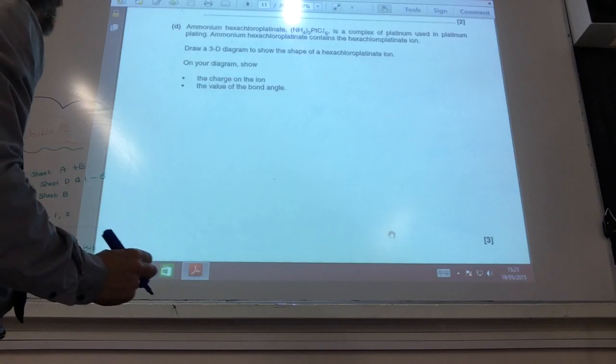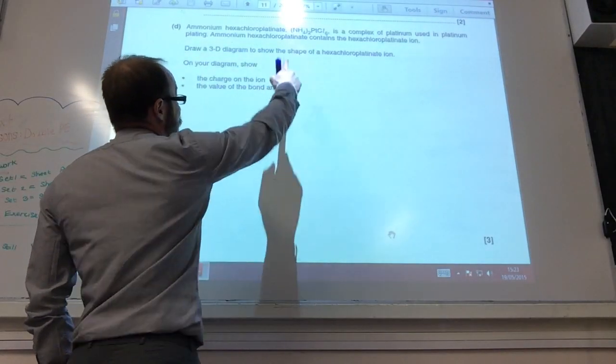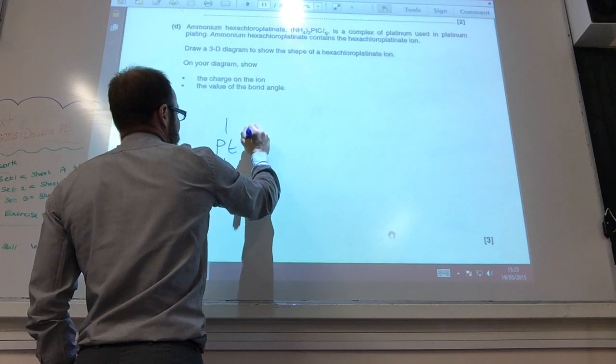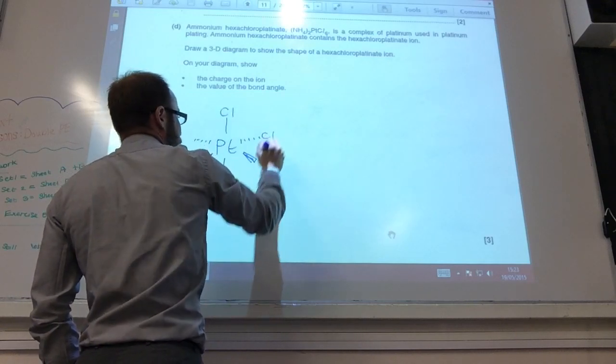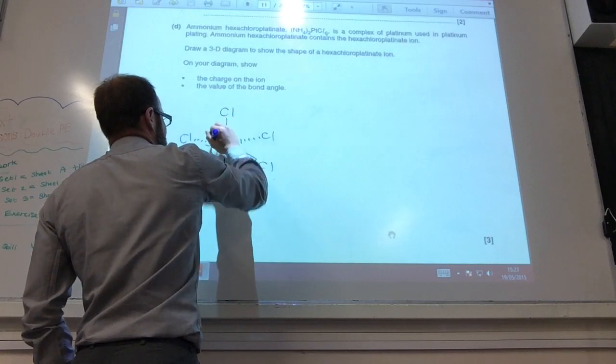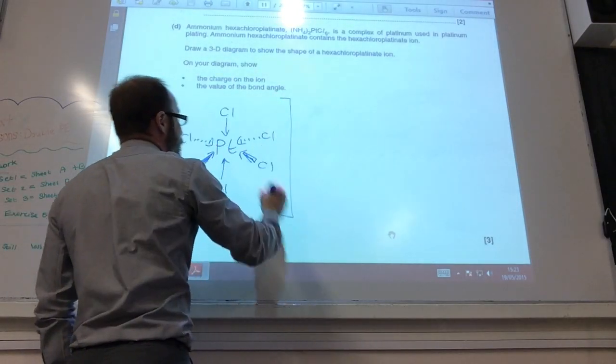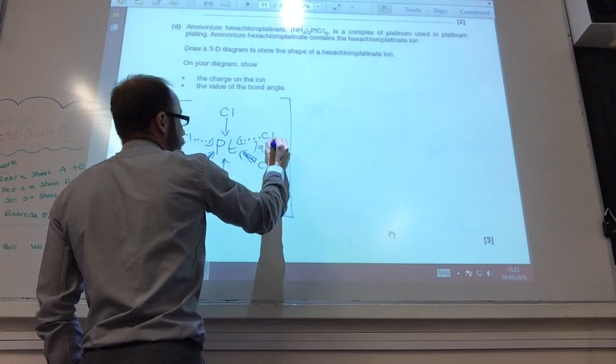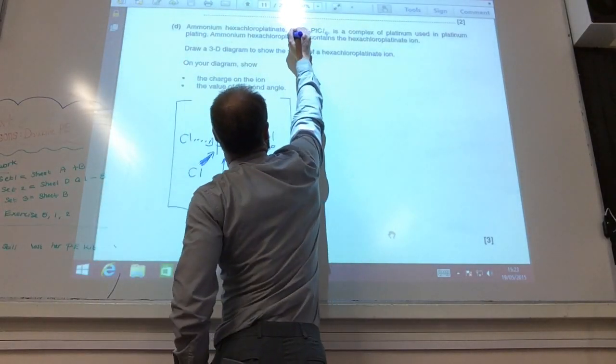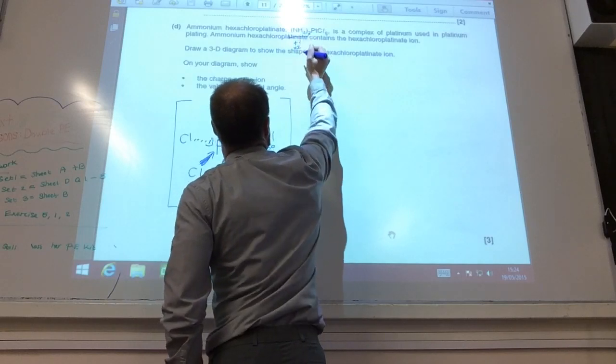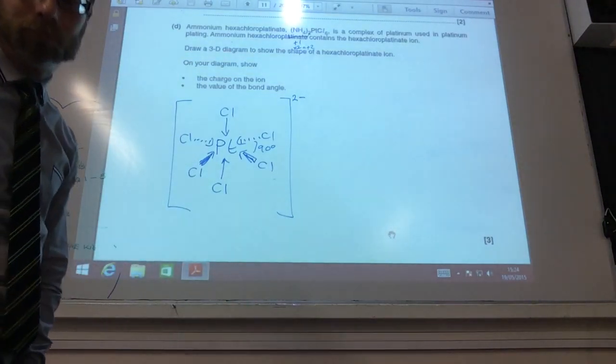Alright, I've now got to draw the hexachloroplatinate ion. So I'm going to have, if you look, you've only got 6 chlorides. So you get your platinum surrounded by your 6 chloride ligands. If you just want to really suck up the examiner, stick arrows on it as well, put it in square brackets. What's the bond angle? Well, the bond angle is octahedral, 90 degrees. What's going to be the charge? Well, ammonium is +1 and I've got 2 of them, so overall that's +2, so this must be -2 overall.